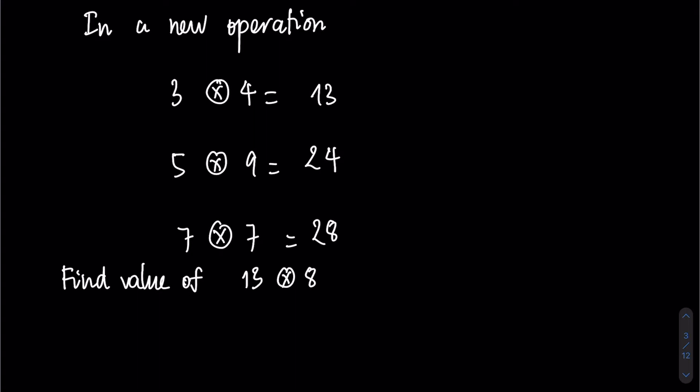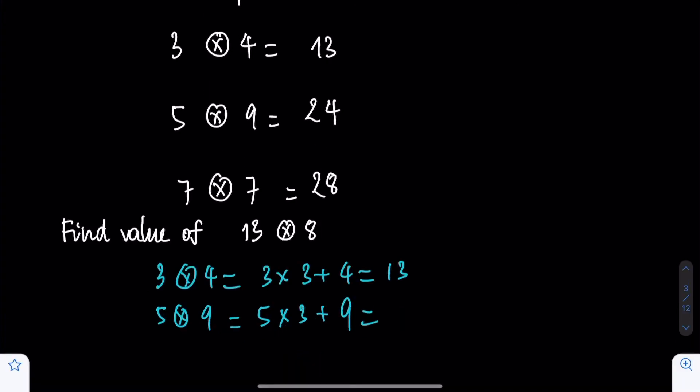We have 3 times circle 4, we can rewrite this as 3 times 3 plus 4, which equals 9 plus 4, which is 13. And 5 times circle 9 can be rewritten as 5 times 3 plus 9, which equals 15 plus 9, which is 24.